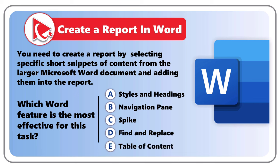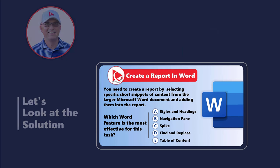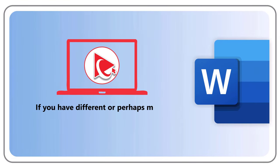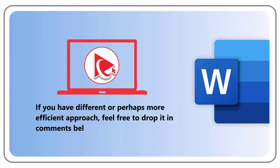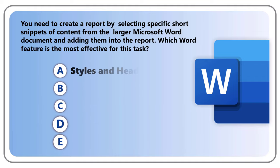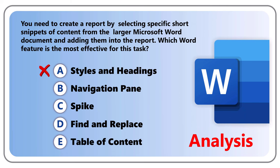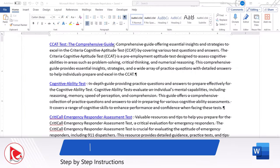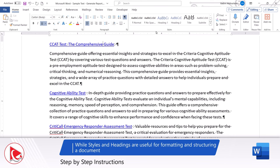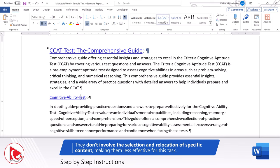Take a close look, analyze the question and select your answer. Let's now transition into revealing the answer and review each presented option individually. Choice A, Styles and Headings, is incorrect — while styles and headings are useful for formatting and structuring a document, they don't involve selection and relocation of specific content, making them less effective for this task. Choice B, Navigation Pane, is also incorrect — it is helpful for browsing and organizing the document, but does not specifically involve cutting and pasting selected content.